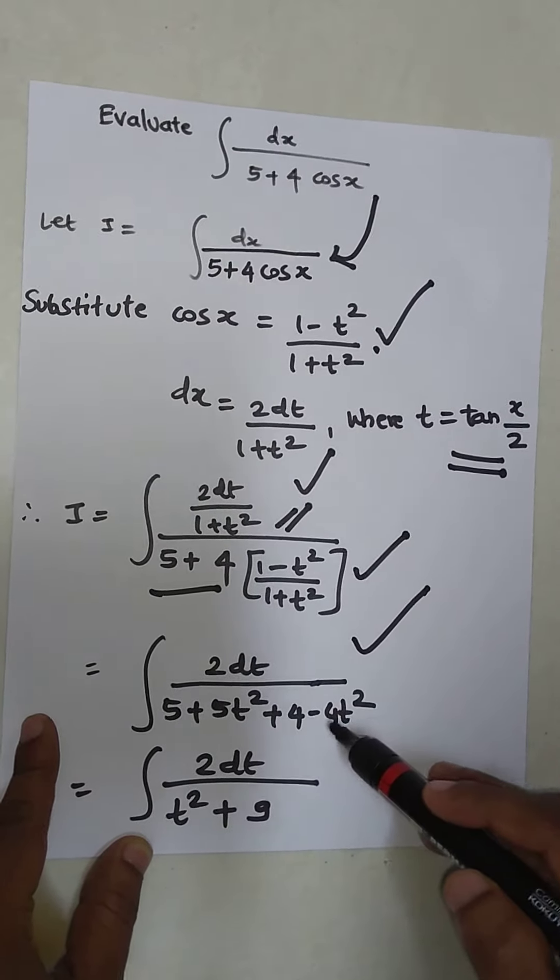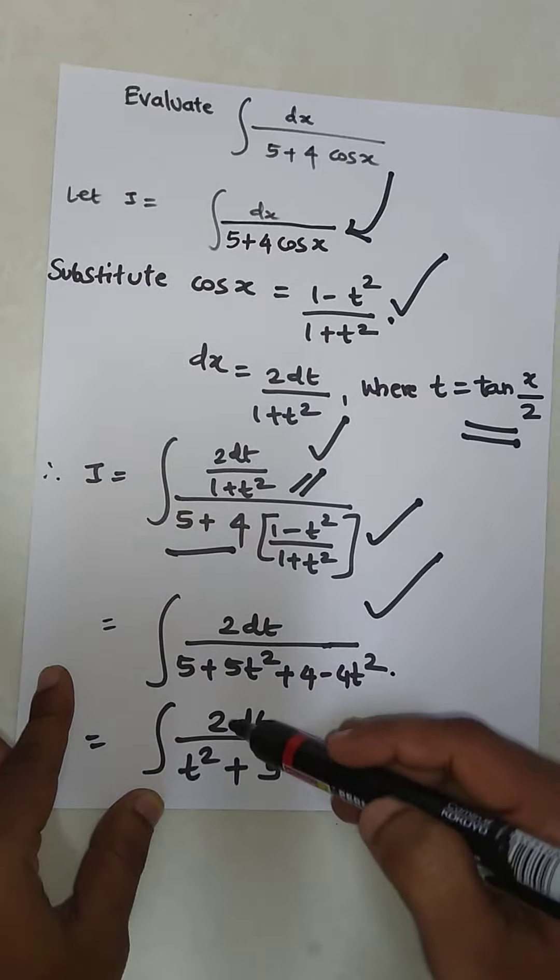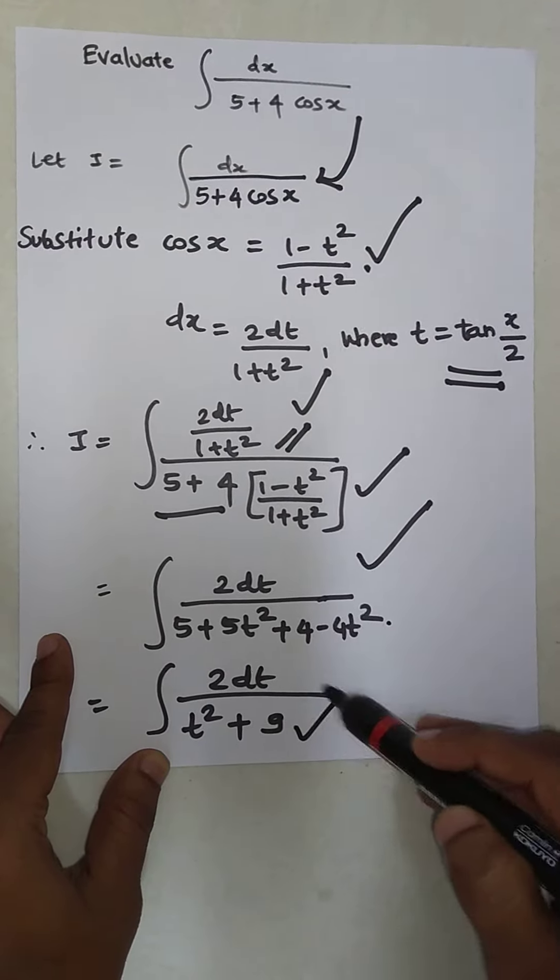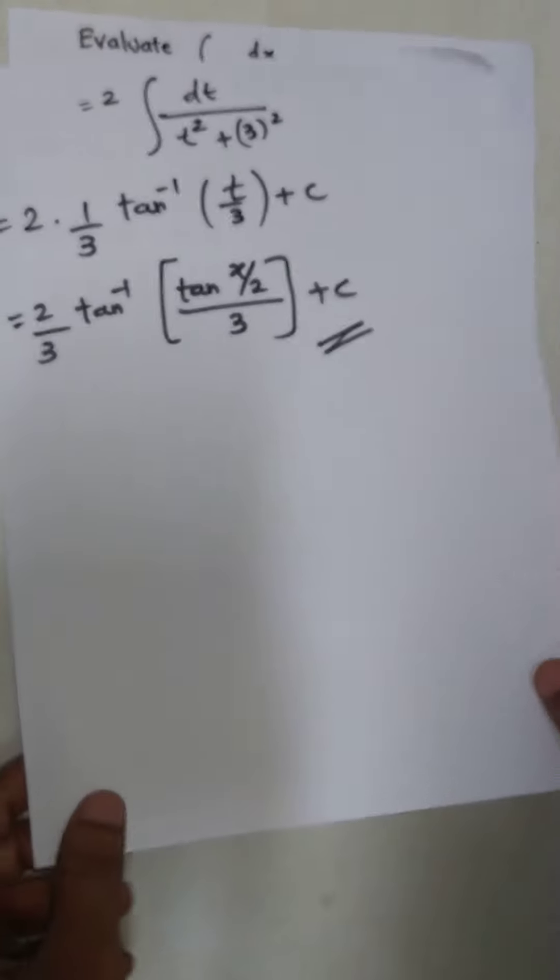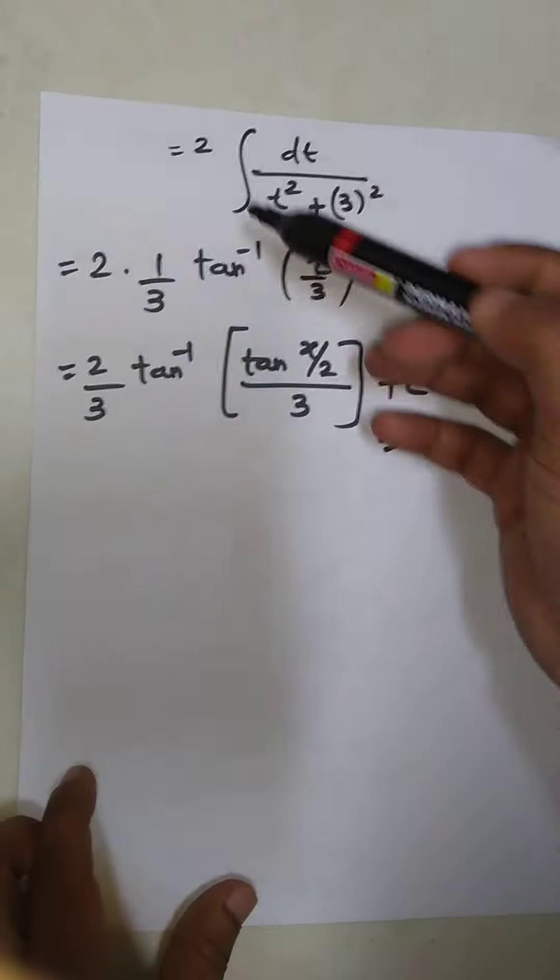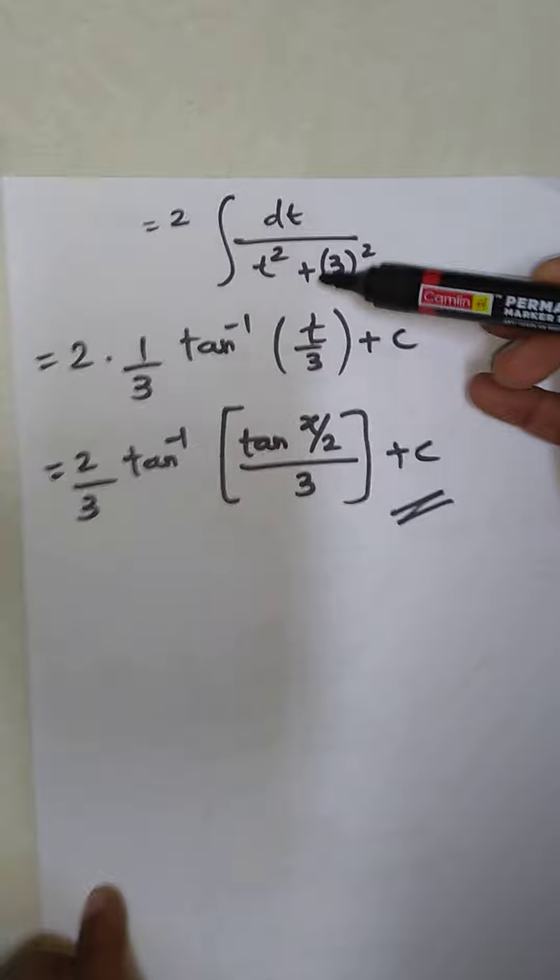5 + 5t² + 4 - 4t². So 2dt where 5 + 4 = 9, and 5t² - 4t² = t². Taking 2 outside the integration: 2∫dt/(t² + 3²).